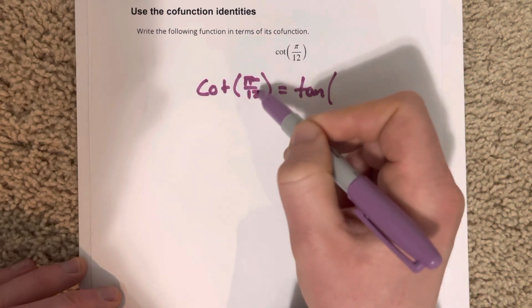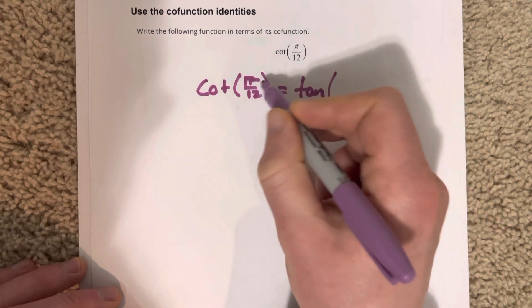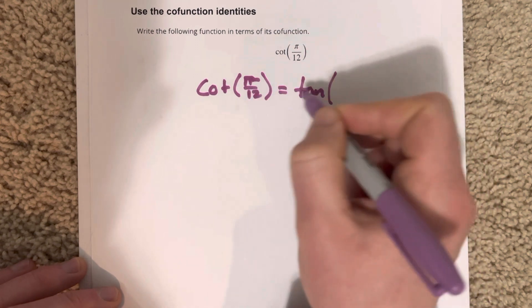So if I have cotangent of pi over 12, then if I find an angle for tangent that when added to pi over 12 gives me pi over 2, then these two things would be equivalent.